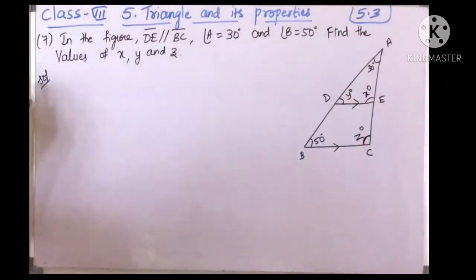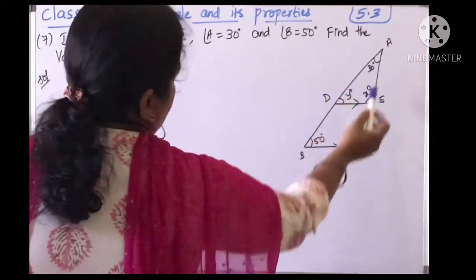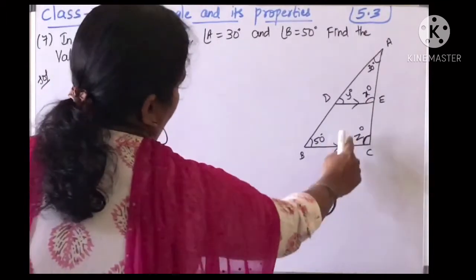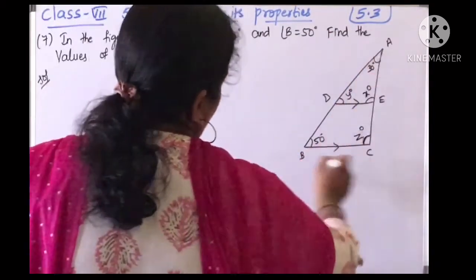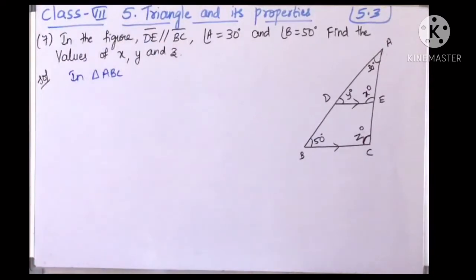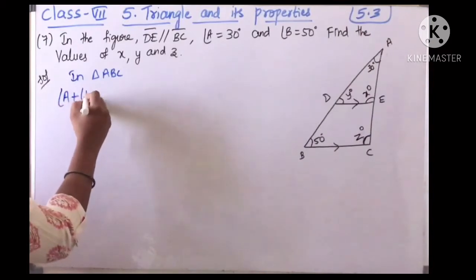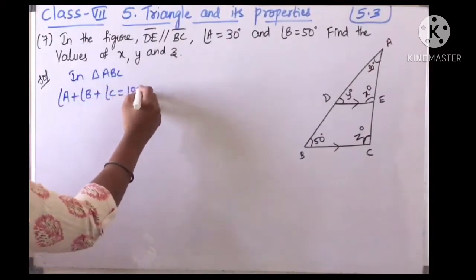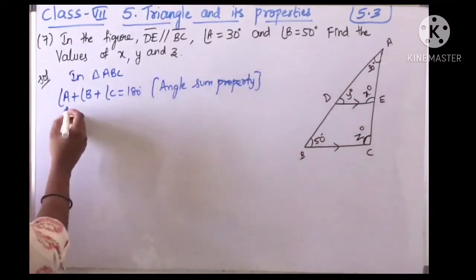Coming to the 7th sum. In the figure, DE is parallel to BC. Angle A is 30 degrees and angle B is 50 degrees. Find the values of X, Y, and Z. First, consider triangle ABC. Angle A is 30, angle B is 50, and angle C is unknown. We will find angle C (the Z value) using the angle sum property.